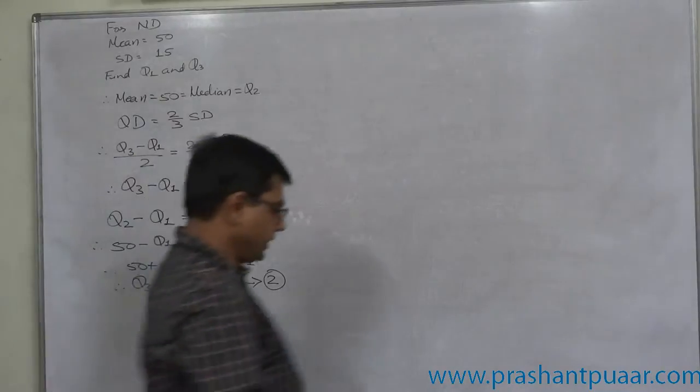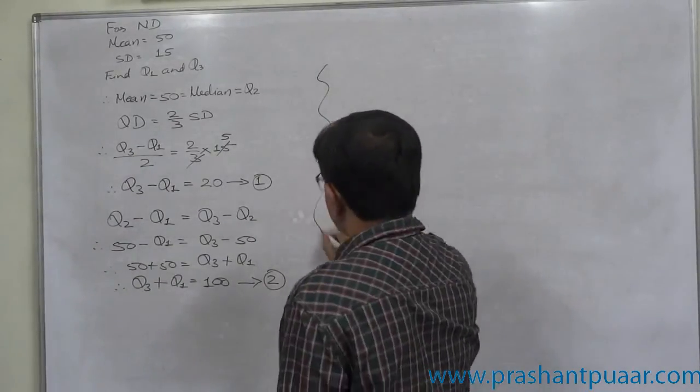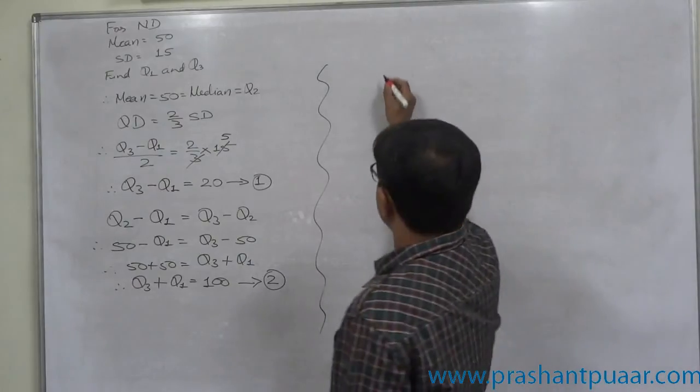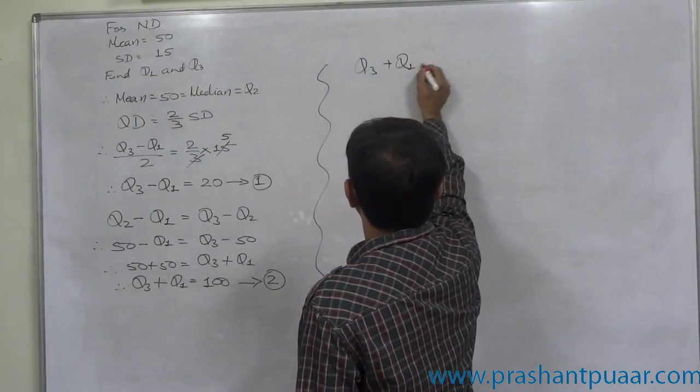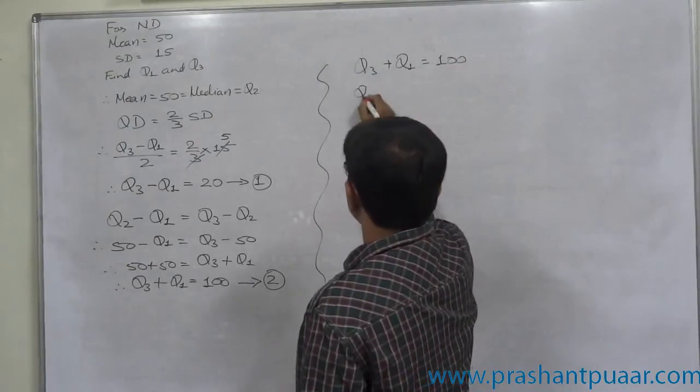If we solve these two equations, we can have the values of Q1 as well as Q3. From the second equation, we are going to subtract the first one.